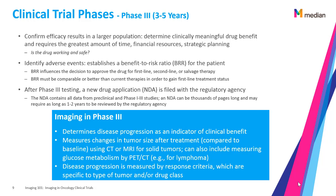BRR must be comparable or better than current therapies in order to gain first-line treatment status. After Phase 3 testing, a new drug application, or NDA, is filed with the regulatory agency. The NDA contains all data from preclinical and Phase 1 through 3 studies. An NDA can be thousands of pages long and may require as long as one to two years to be reviewed by the regulatory agency.